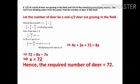Once you solve this, multiply throughout by 8. What you will get is the equation 4x plus 3x plus 72 equal to 8x. 72 equal to 8x minus 7x, x equal to 72. Hence, the required number of deer equal to 72.